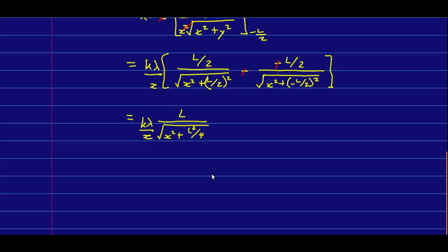And there's our final answer, except it's always good after you've done something this complicated to check the units. So, notice, what we have here is we have a k, which is in Newton meters squared per Coulomb squared, times a lambda, which is in Coulombs per meter, divided by an x, which is in meters.